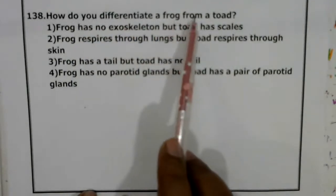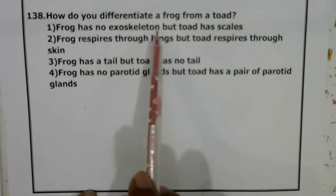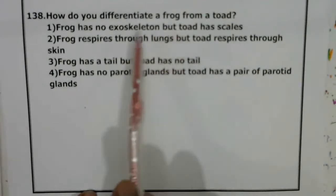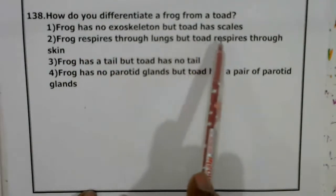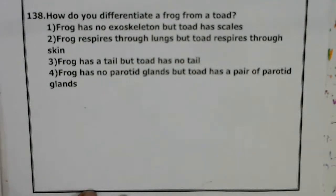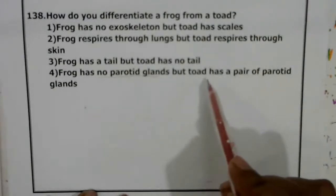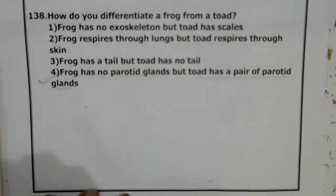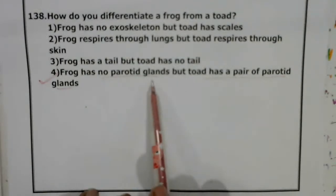How do you differentiate a frog from a toad? 'Frog has no exoskeleton but toad has scales' — this is incorrect. 'Frog respires through lungs but toad respires through skin' — both respire through lungs, so this is also incorrect. 'Frog has tail but toad has no tail' — incorrect, adult frog has no tail. The correct answer is: frog has no parotid glands but toad has a pair of parotid glands. Toad is quite big in size and has a pair of parotid glands — that is the main difference between a toad and a frog.